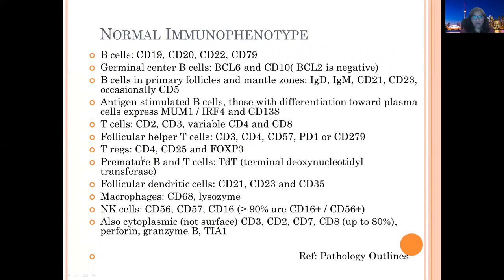T cells express CD2, CD3, and variable amounts of CD4 and CD8. Follicular helper T cells express CD3, CD4, CD57, and PD1. T regulatory cells express CD4, CD25, and FOXP3. Precursor B cells express TdT. Follicular dendritic cells — CD21 and CD23 are very helpful when looking at vague nodules to highlight the background dendritic meshwork.